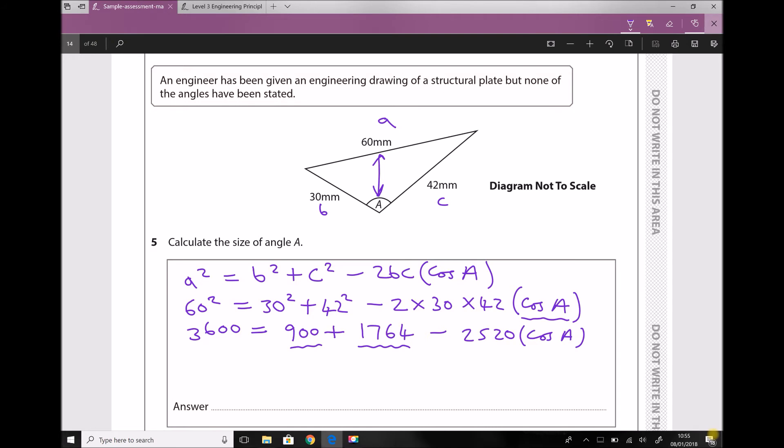So 3600 minus 900 minus 1764 is 936. Therefore, 936 equals minus 2520 cos A.